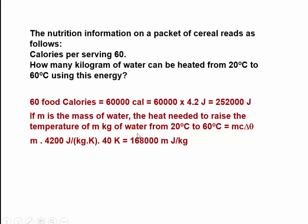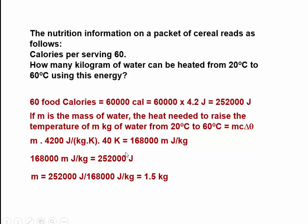So 168,000M joules per kilogram is equal to 252,000 joules. We solve for M by dividing both sides by 168,000. We get M equal to 252,000 joules divided by 168,000 joules per kilogram. The joules cancel and the kilogram moves to the numerator, giving a result of 1.5 kilograms.